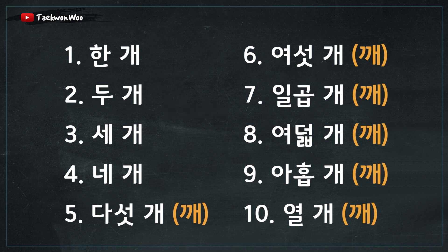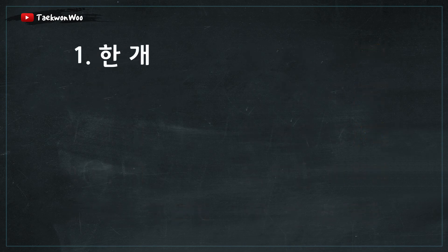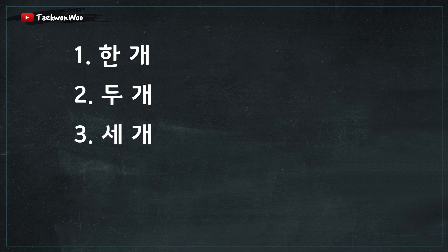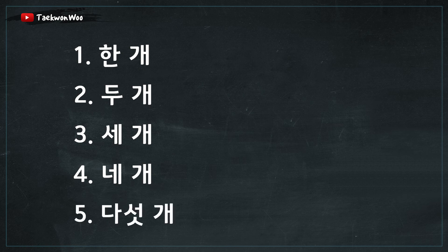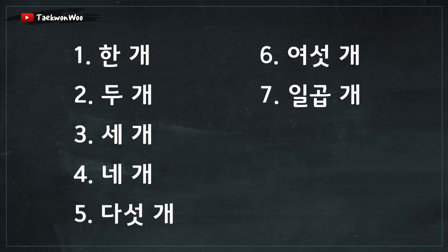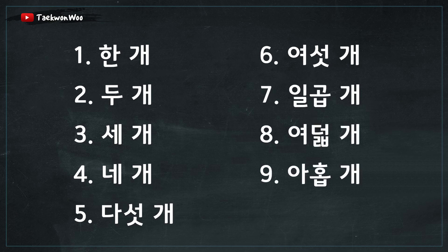Alright, now let's count all of them once again at normal speed. Repeat after me. 한 개, 두 개, 세 개, 네 개, 다섯 개, 여섯 개, 일곱 개, 여덟 개, 아홉 개, 열 개.